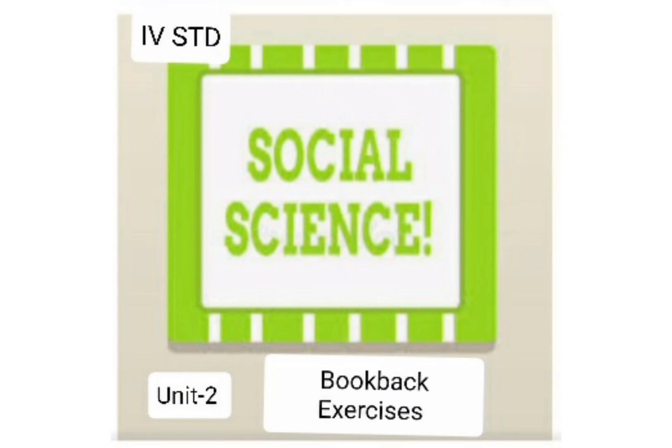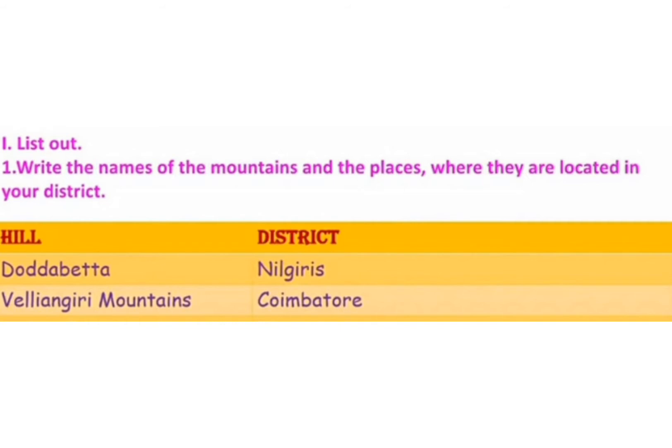Good morning, dear children. In today's session we are going to do book back exercises of Unit 2: Landforms. Let us do first Roman number one: list out and write the names of the mountains and the places where they are located in your district. A tabular column is given with serial number, mountains, and places.